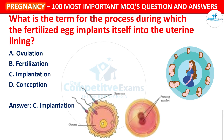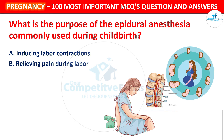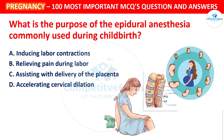Next question: What is the purpose of epidural anesthesia commonly used during childbirth? Your options: Inducing labor contractions, Relieving pain during labor, Assisting with delivery of the placenta, or Accelerating cervical dilation. The correct answer is Relieving pain during labor. Epidural anesthesia is administered to relieve pain during labor by numbing the lower half of the body.